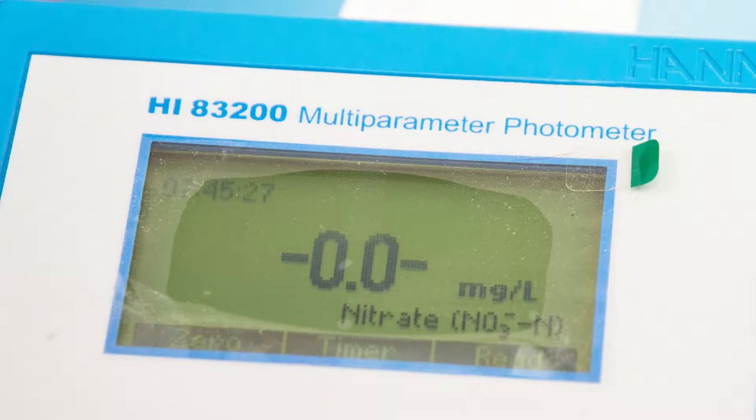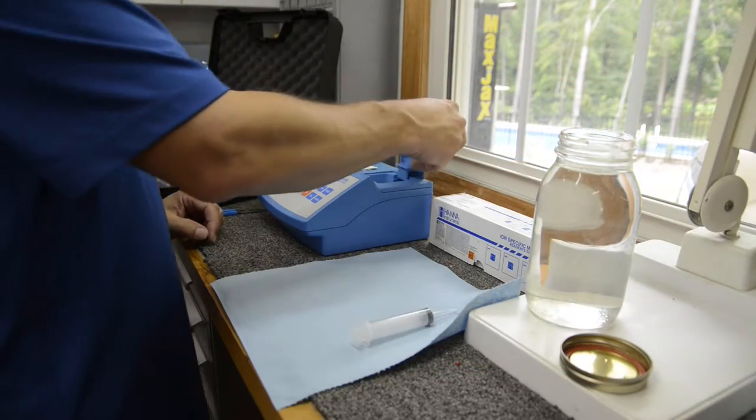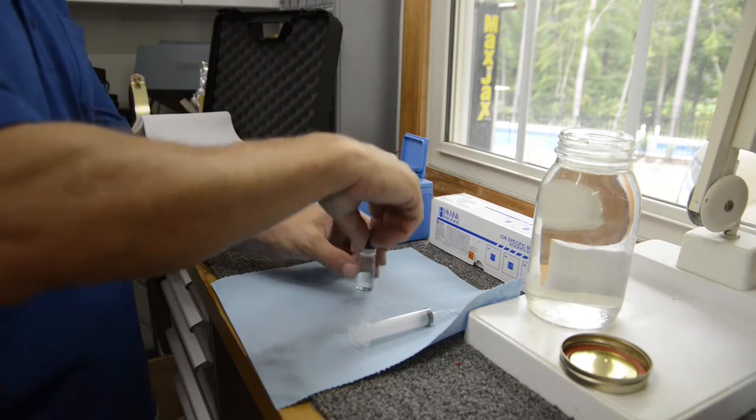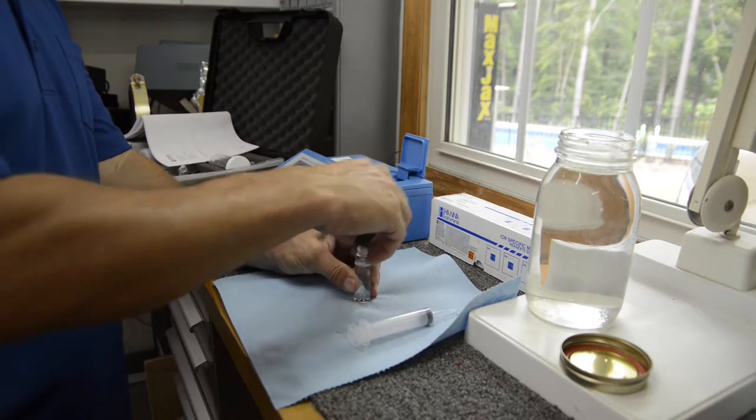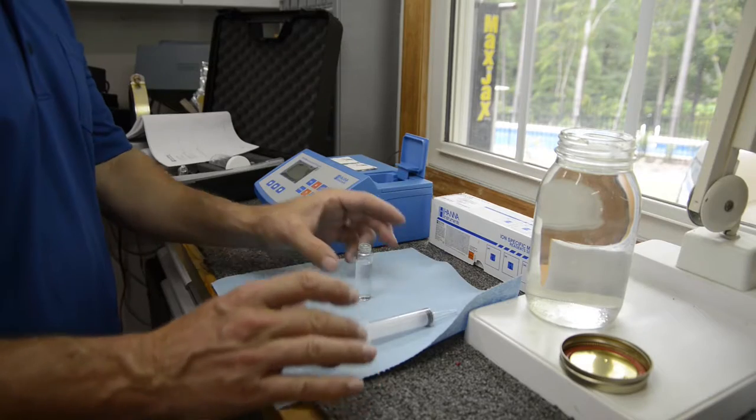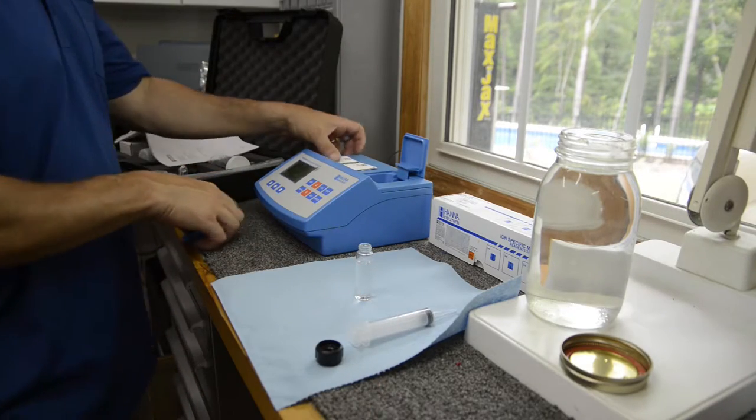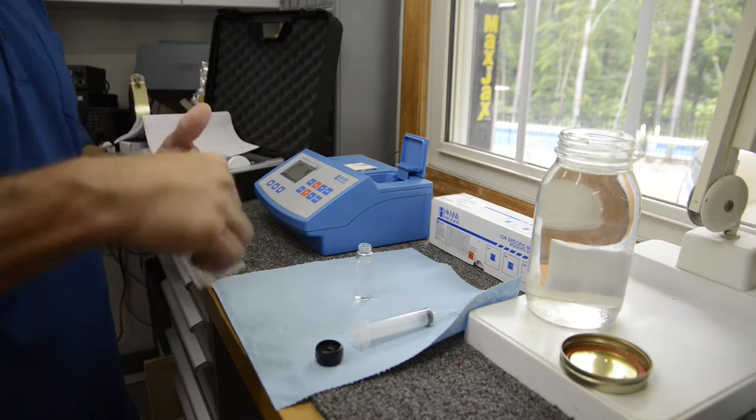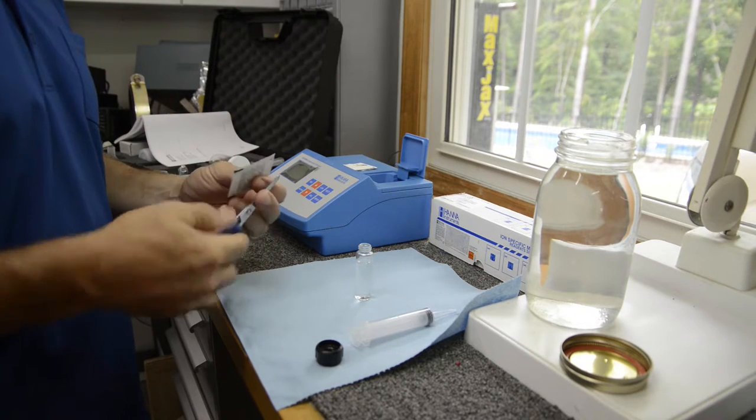So here we are - zero point zero. Now we're going to add in a reagent, and what a reagent is, is something that will colorize the water. It's a powder, and they have reagents for different things, like nitrate, copper.